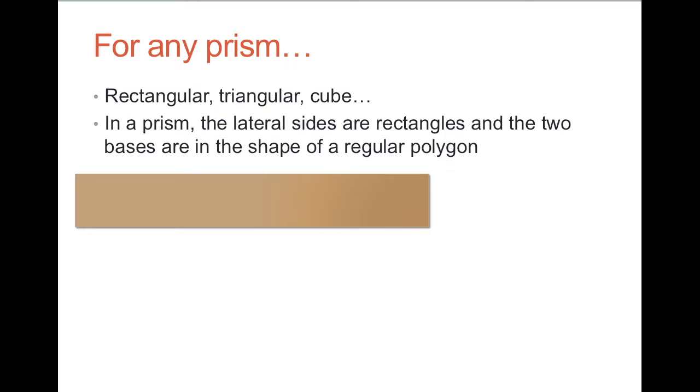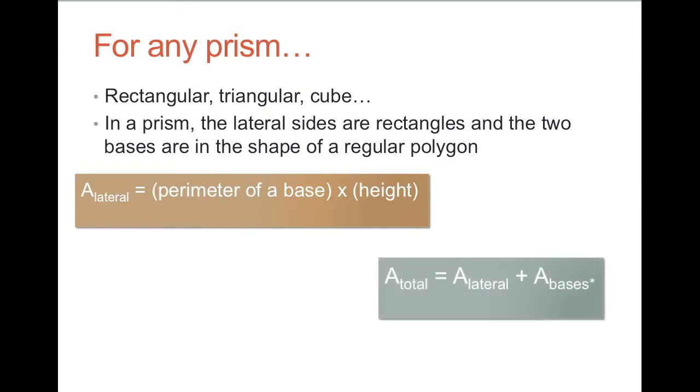The two bases are in the shape of a regular polygon. So the lateral sides are rectangles. The formula is the area of lateral equals the perimeter of the base times the height. And the total area is when you add the lateral area plus the area of the bases. Prisms have two bases, so you could do 2 times area of base if that helps you.